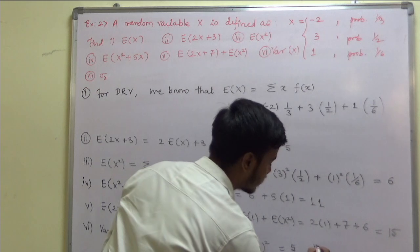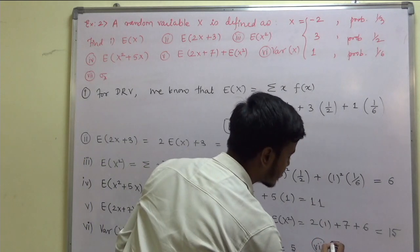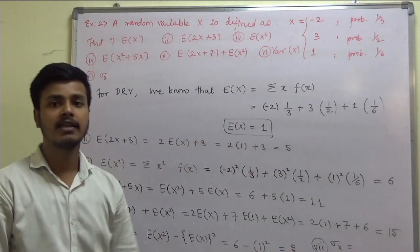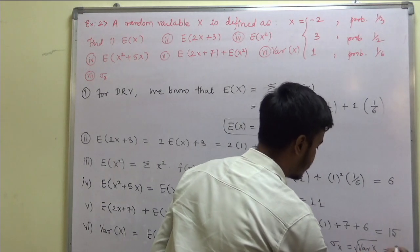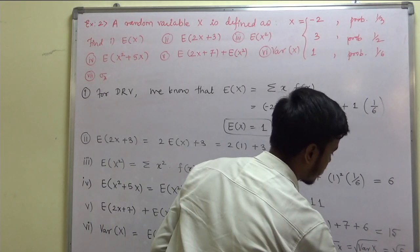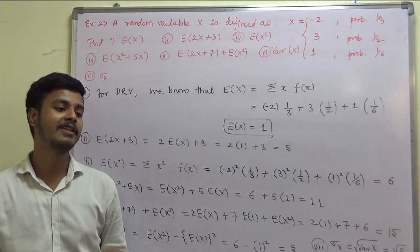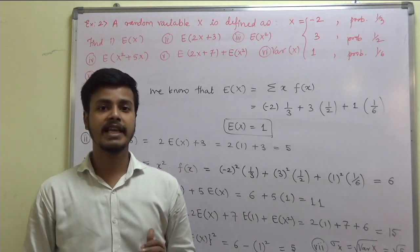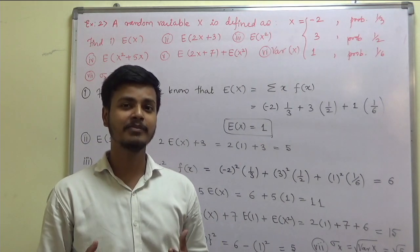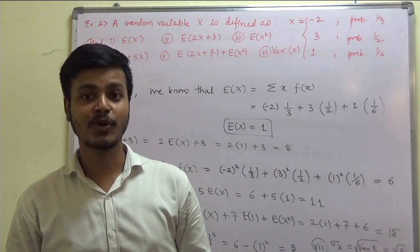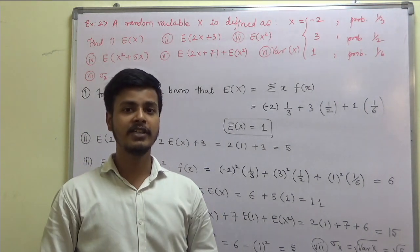The last one, the seventh, is sigma x — the standard deviation. Standard deviation is the square root of variance of x, which is the square root of 5. This completes the problem. I hope you liked it because the example on discrete random variable is a simple problem. We just need some brain exercise to solve problems on continuous random variable. Thank you for watching this learning video and have a good day.